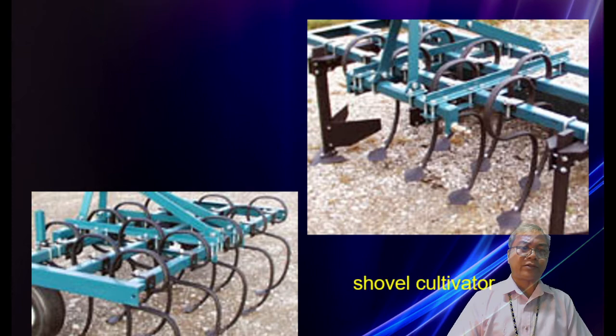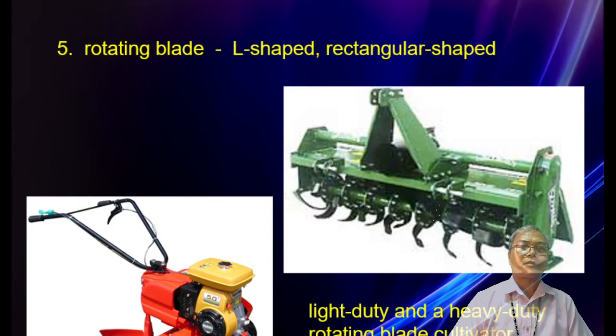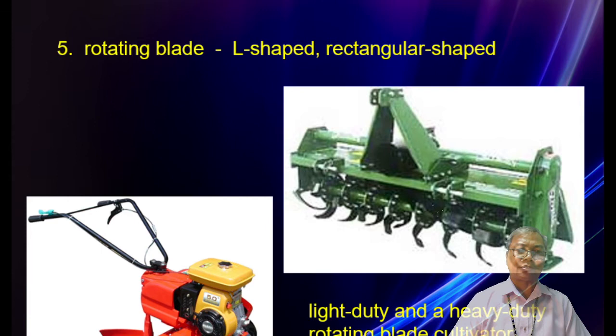These are pictures of cultivators, including spring furrow types. Number five is the rotating blade cultivator — available in L-shape and rectangular shape. On the left side is the light-duty version, and on the right is the heavy-duty rotating blade cultivator. The left one is for single-row cultivation.